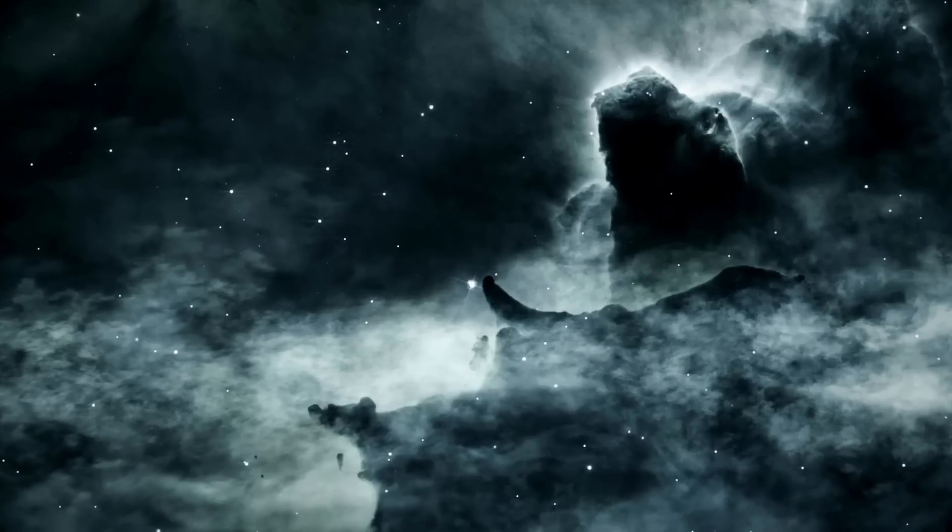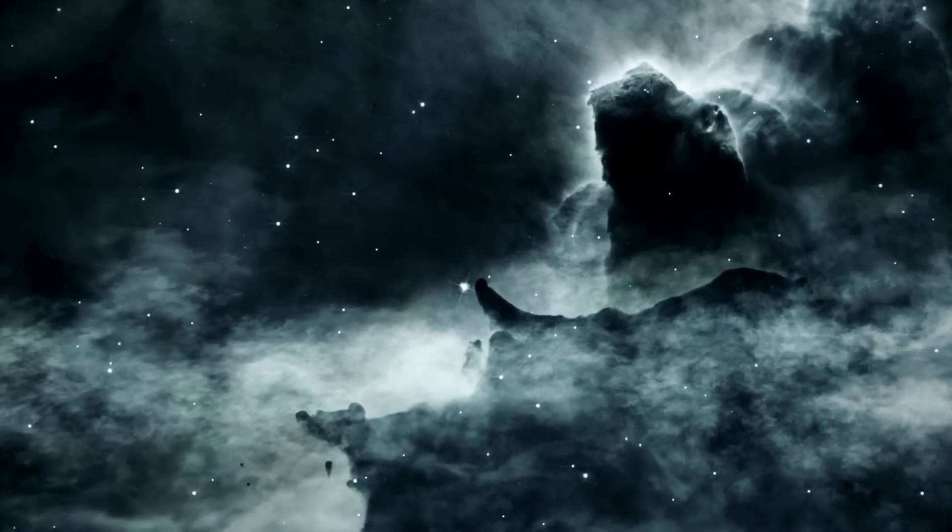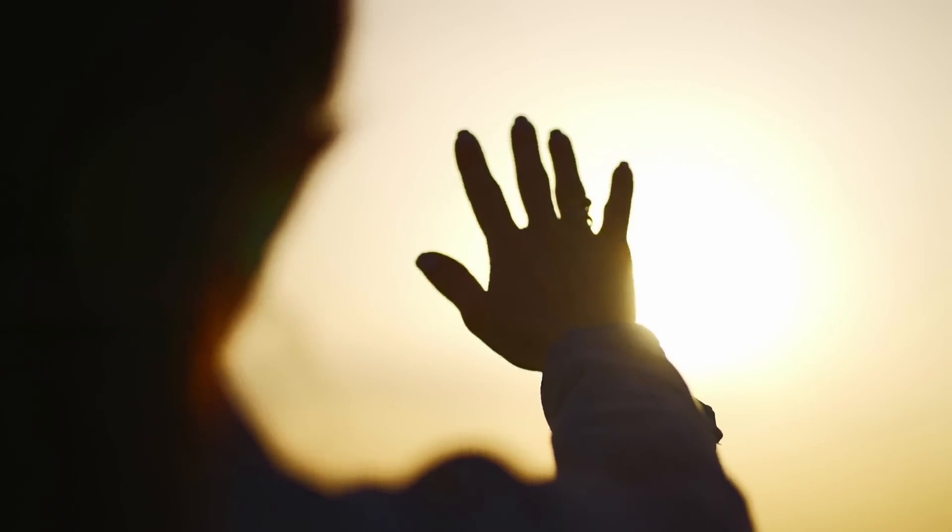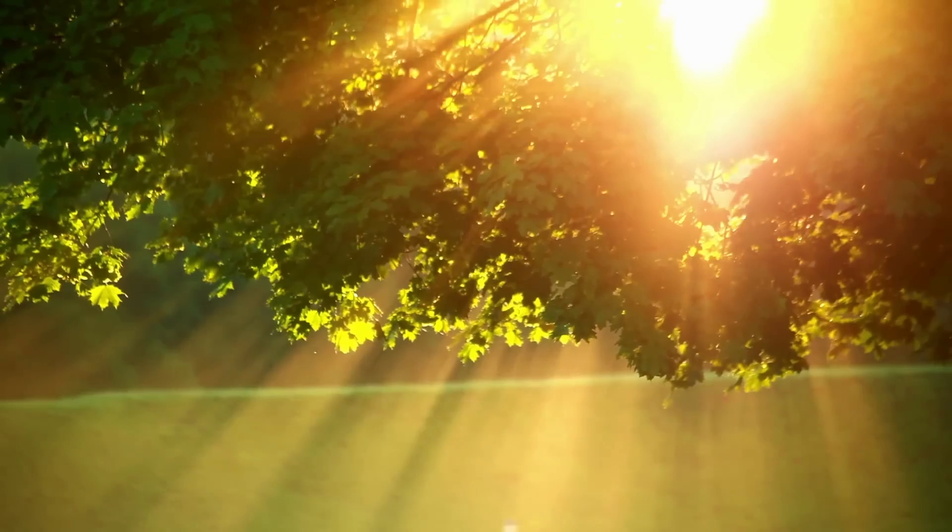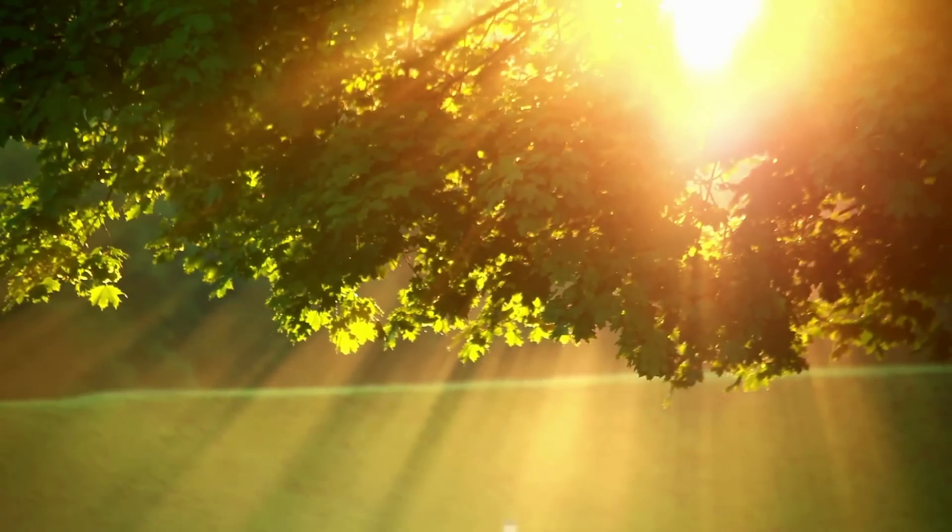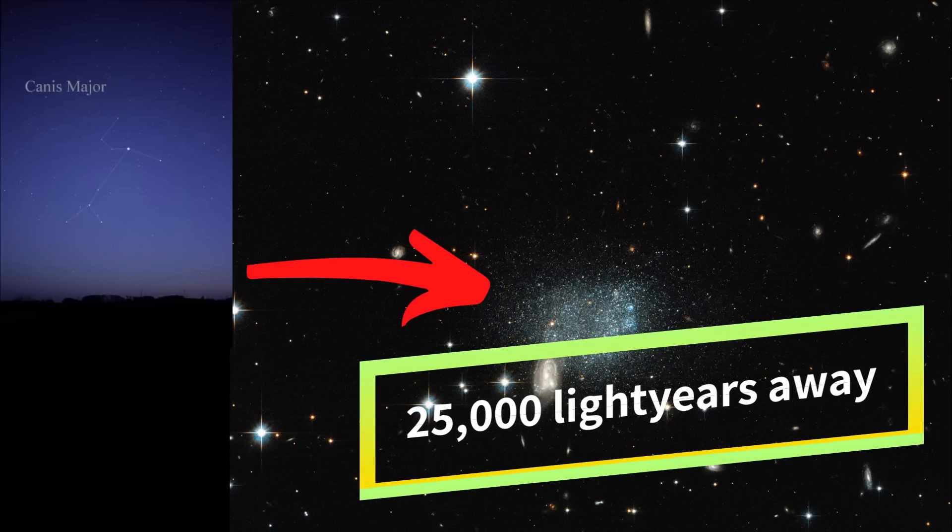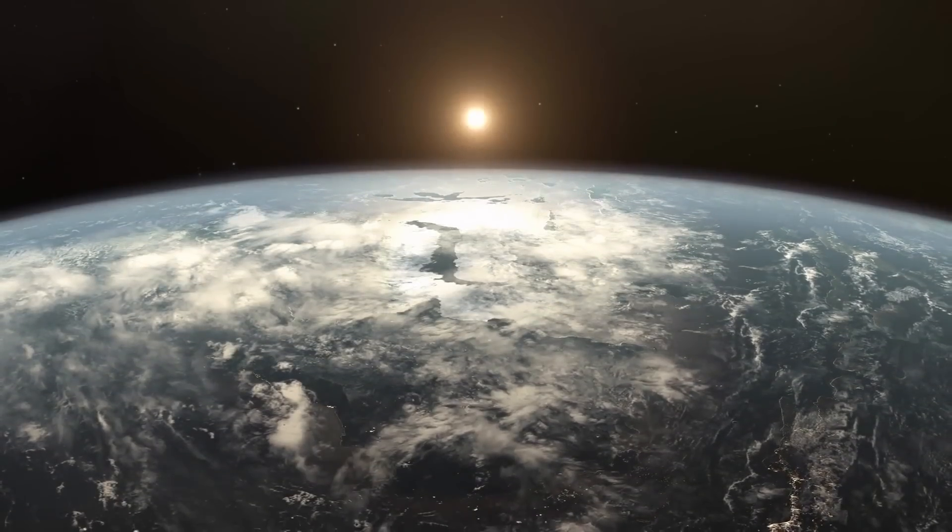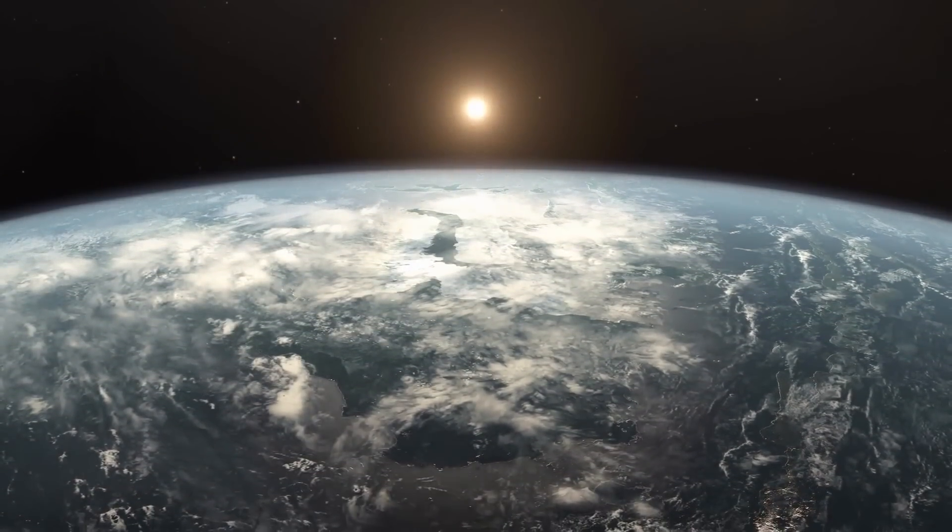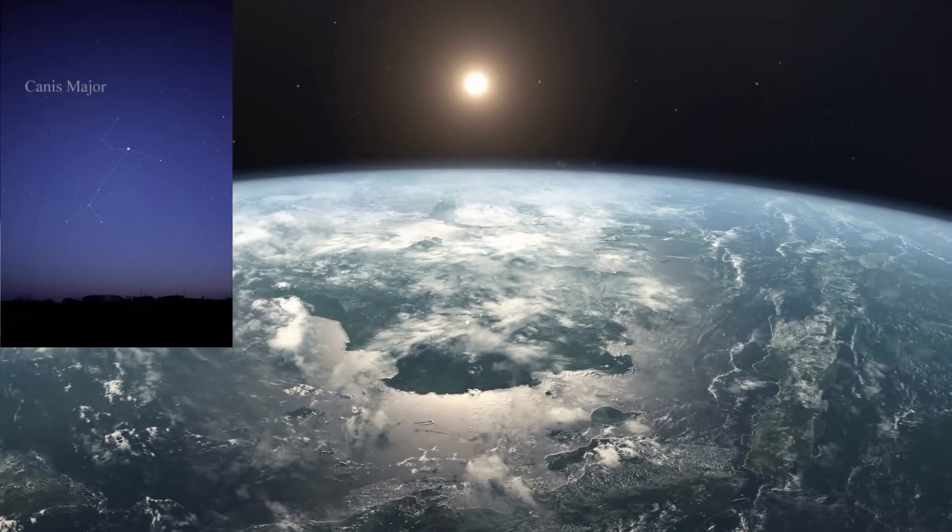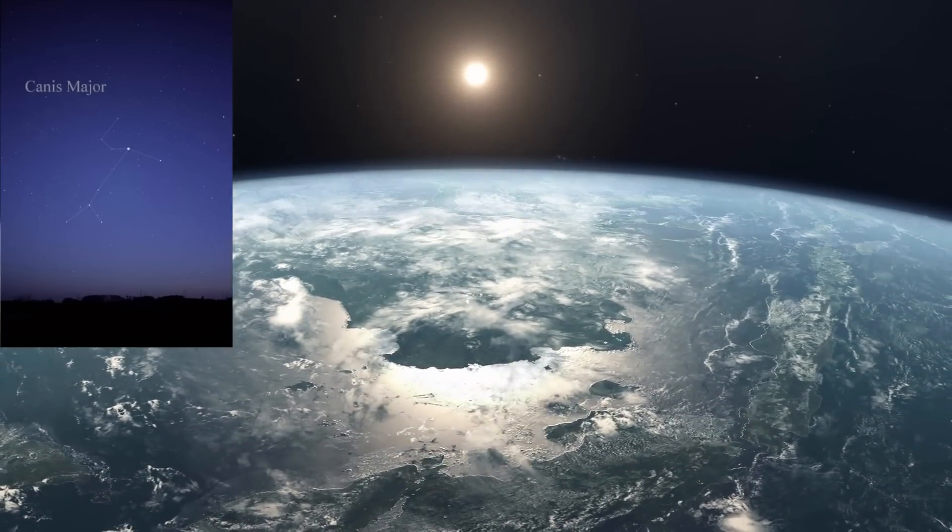When we look at distant galaxies light years away, we aren't seeing it in the most recent state. Its distance in light years translates to the number of years it takes for its light to arrive on Earth. For example, the closest galaxy to ours is the Canis Major dwarf galaxy, which is 25,000 light years away. So it takes 25,000 years to reach Earth. That means when we look at Canis Major dwarf, we're seeing it as it was 25,000 years ago.